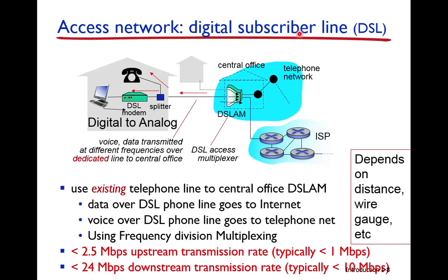The main advantage of DSL is that it uses existing telephone lines — there is no need to deploy new infrastructure. The existing telephone infrastructure can be used for both voice and internet communication. The DSLAM decides whether data goes to the telephone network or the internet, using frequency division multiplexing to define three channels on a single link.